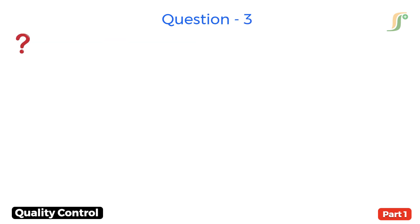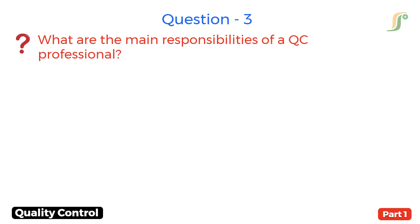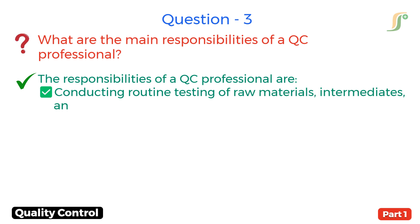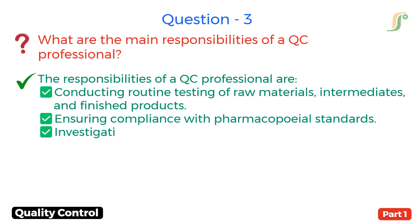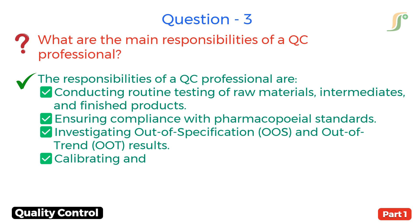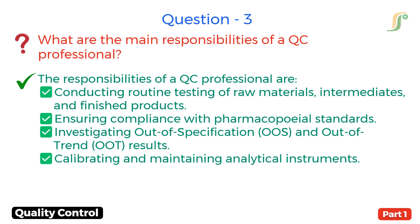Question 3. What are the main responsibilities of a QC professional? Answer. The responsibilities of a QC professional are: conducting routine testing of raw materials, intermediates and finished products; ensuring compliance with pharmacopoeial standards; investigating out-of-specification and out-of-trend results; and calibrating and maintaining analytical instruments.